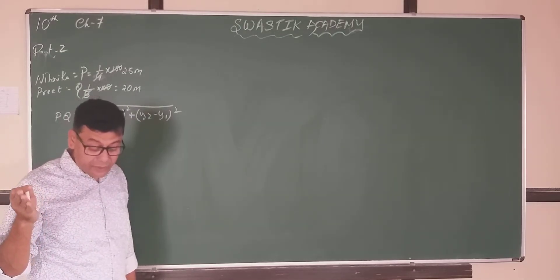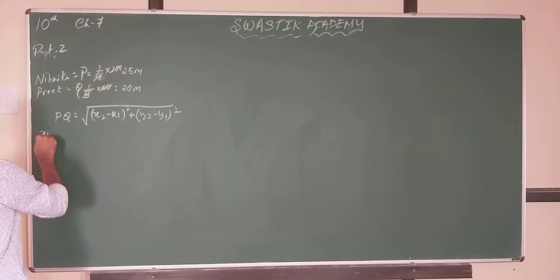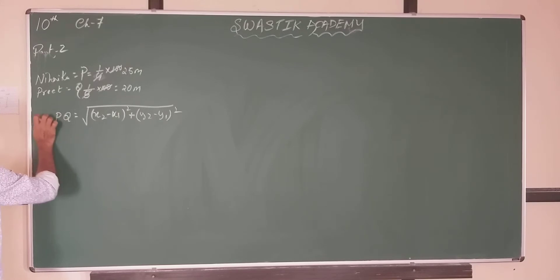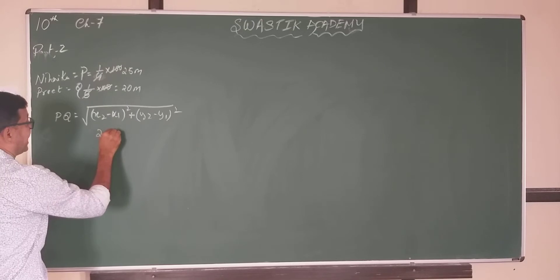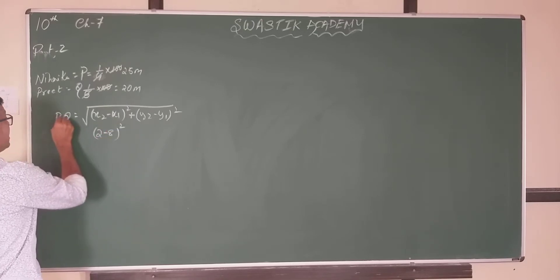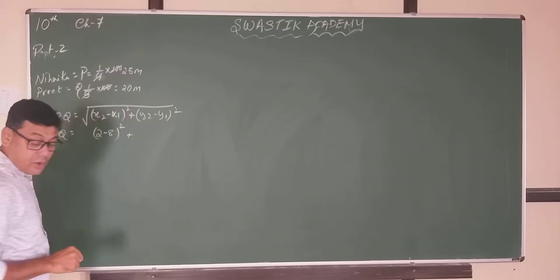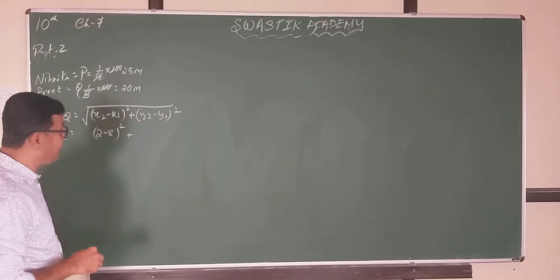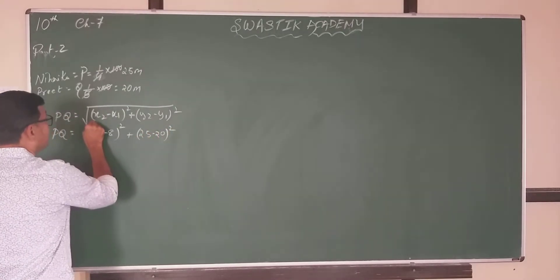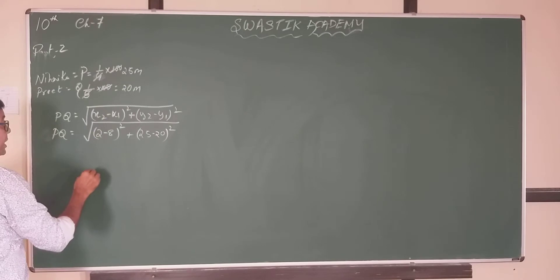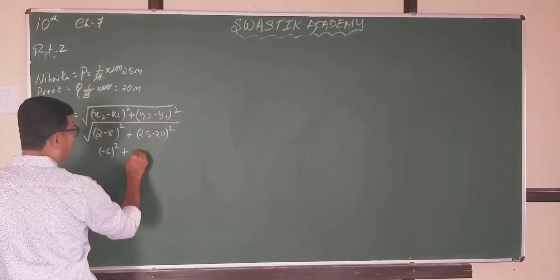So consider x1, x2 and y1, y2. That will be: PQ equals the square root of (2 − 8)² plus (y2 − y1)². So PQ equals the square root of (2 − 8)² — which is (−6)² — plus (25 − 20)², which is 5².